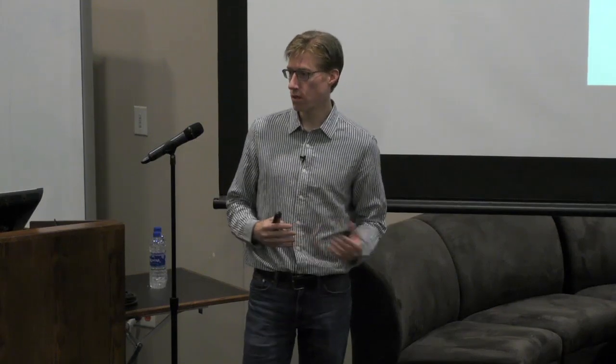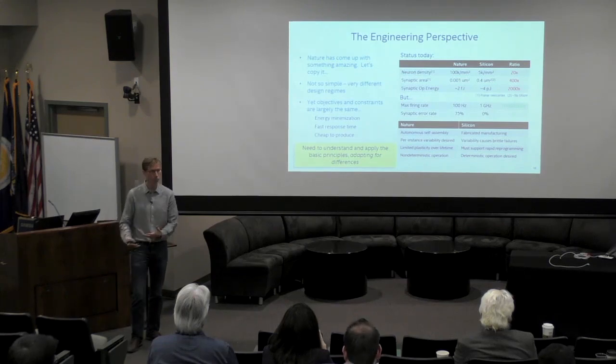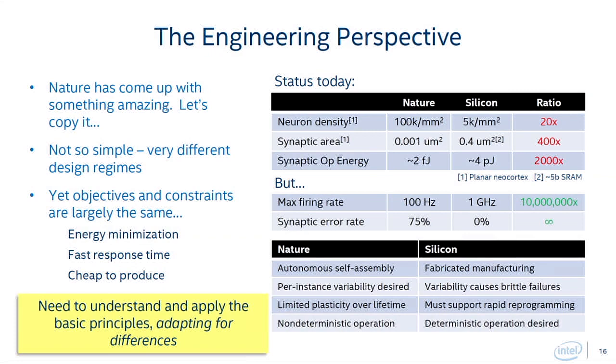The key point is that the objectives are the same for nature and for our artificial systems: very good energy efficiency, very fast response times, and cheap manufacturing. Broadly speaking, the drivers of 600 million years of brain evolution should be applicable to the systems we want to build. We have to understand the principles that have arisen over that period and adapt them into the system we're building. That's our philosophy — the perspective we brought into the Loihi neuromorphic research program.